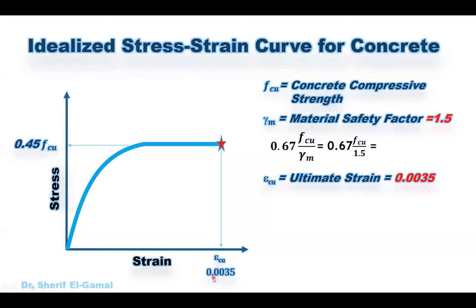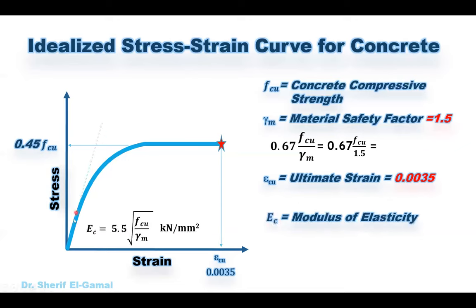The ultimate strain of 0.0035 means that if the compressive strain in the concrete reaches this value, we assume the concrete will crush and will not be able to resist any additional forces or compressive strains. Once this value is reached, we assume the concrete has collapsed. The initial slope of the curve gives the modulus of elasticity of concrete Ec, obtained from the relevant equation in kilonewton per millimeter squared. The key values in the BS code are: maximum stress = 0.45 fcu and ultimate strain = 0.0035.